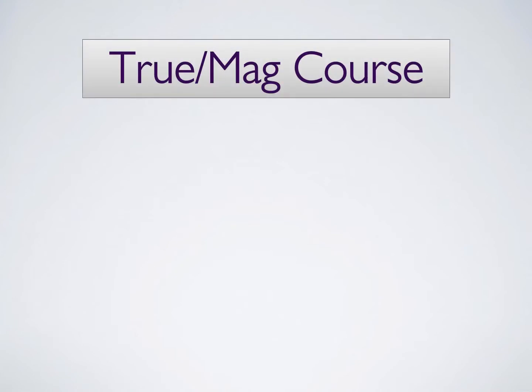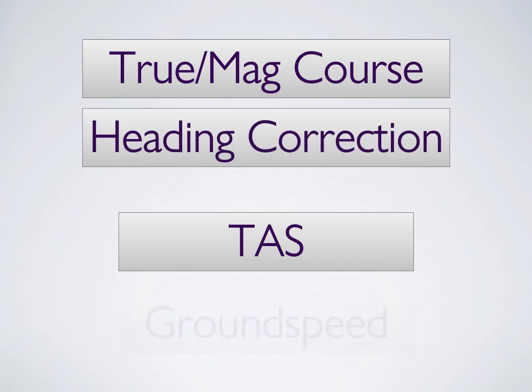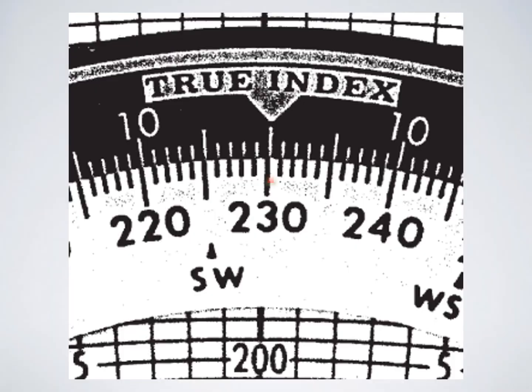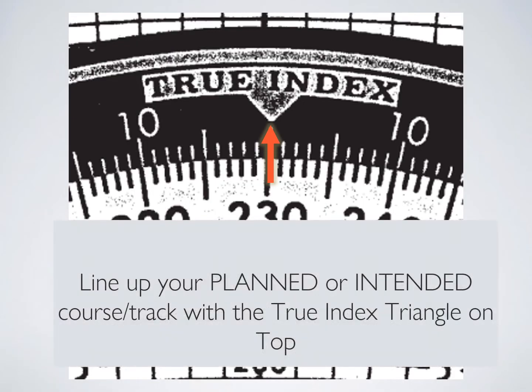In order to do this, you're going to need four pieces of information. You are going to need from your navigation log your intended course and your true airspeed that you planned for. You are also going to need your in-flight heading correction and you're going to need your in-flight ground speed. The first thing that you're going to do is you're going to line up your intended or your planned course or track with the top of that true index triangle.